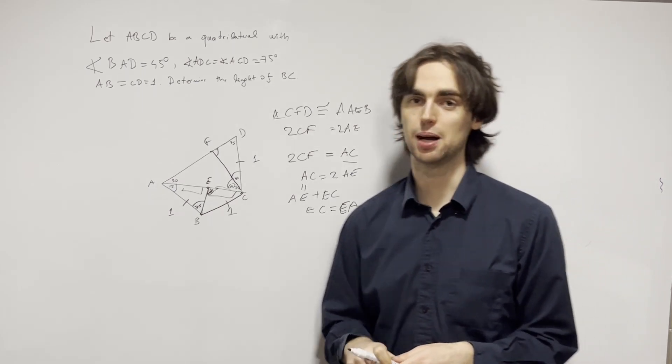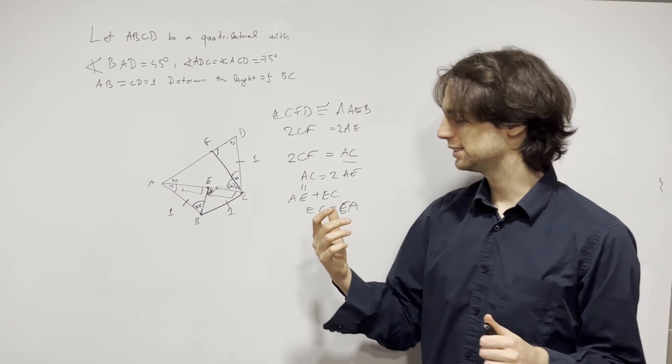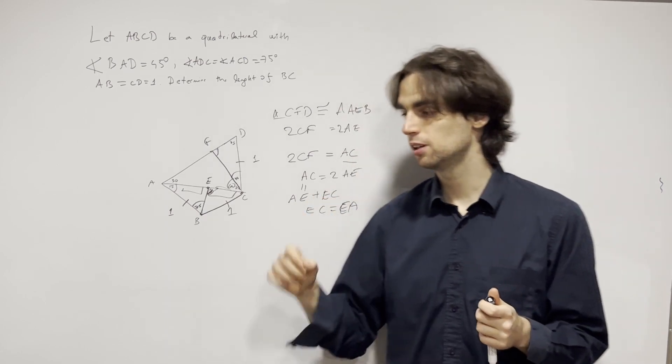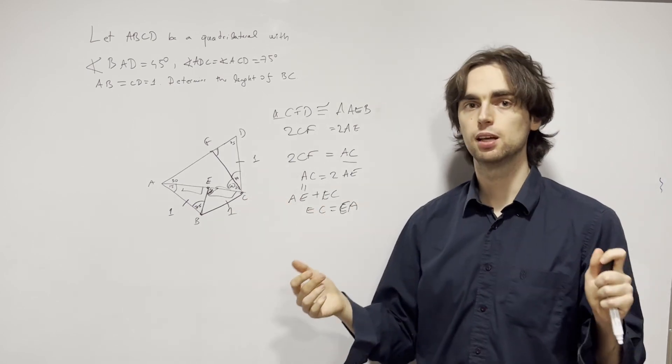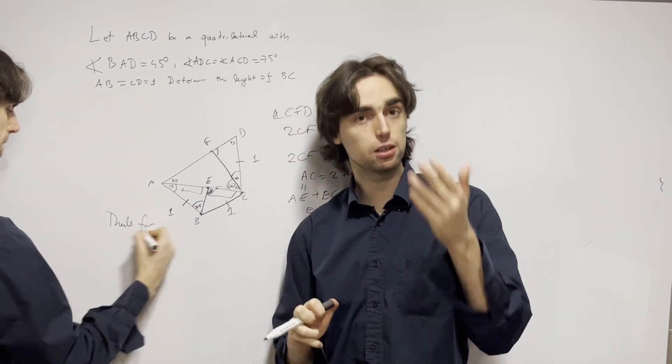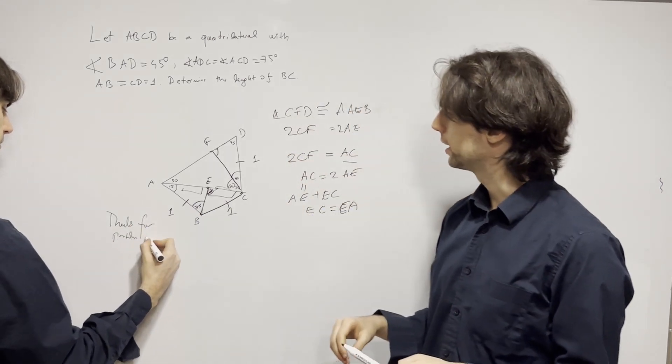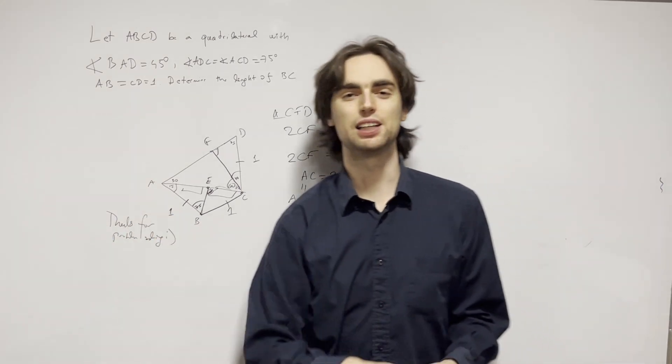And that finishes up our problem. I hope you enjoyed this introductory geometry problem. It's meant to teach you sort of just adding a point, adding points and playing around with a diagram until you figure out which points to add. I'm actually curious if you find other solutions. I can cover them later. And as always, thanks for problem solving.